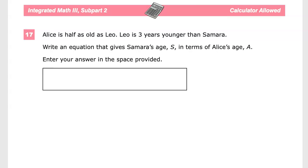Since we're using unknown amounts, we'll probably have to use variables. The three variables that I'm going to use will be A, of course, that's Alice's age, L for Leo's age, and then Samara's age as well. So, those are the three variables I'm going to end up using.